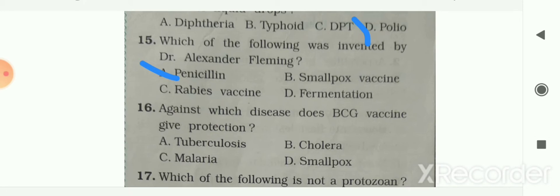Next question: against which disease does the BCG vaccine give protection? Options are tuberculosis, cholera, malaria, and smallpox. Your answer is option A — tuberculosis. BCG vaccine gives protection against tuberculosis.